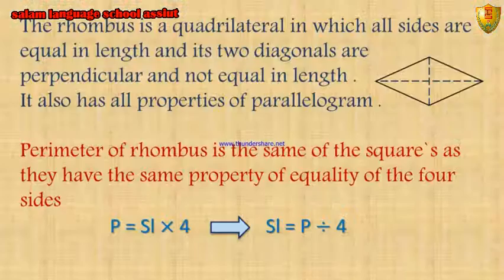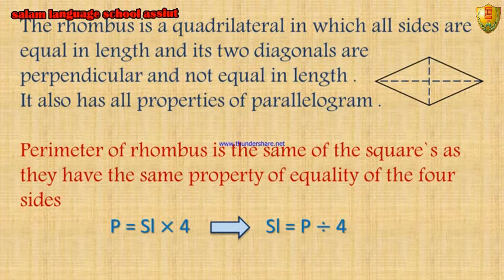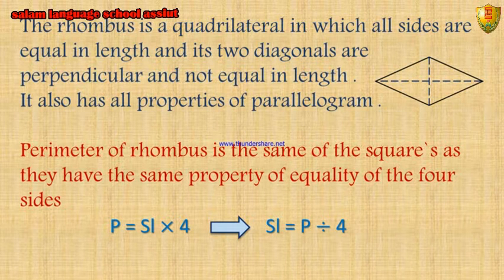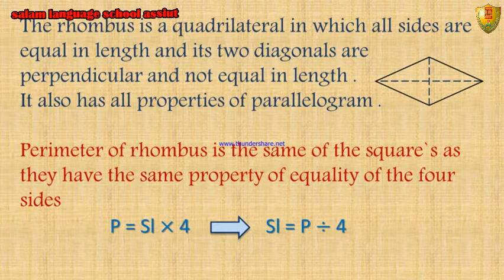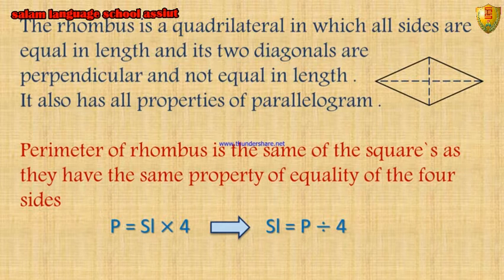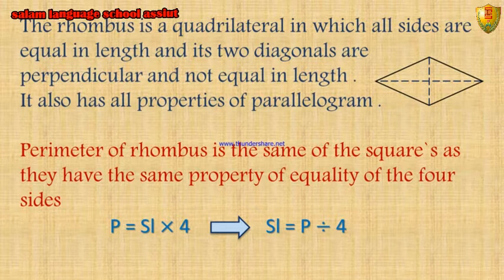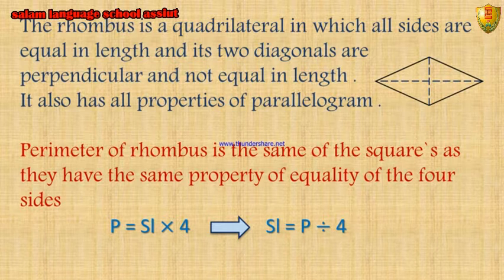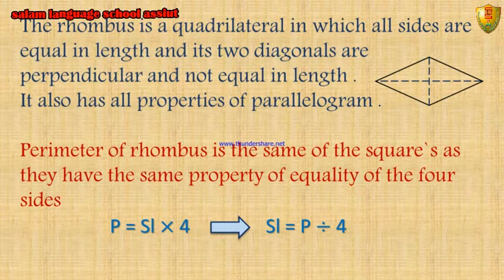Area of the rhombus. The rhombus is a quadrilateral in which all sides are equal in length, and its two diagonals are perpendicular and not equal in length. It also has all properties of the parallelogram. The perimeter of the rhombus is the same as the square's, as they have the same property of equality of four sides. Perimeter equals side length times 4, and side length equals perimeter divided by 4.